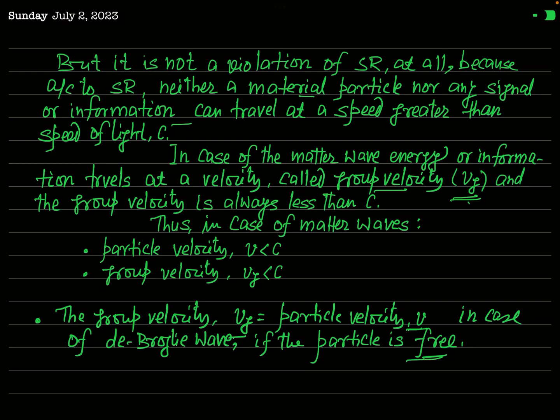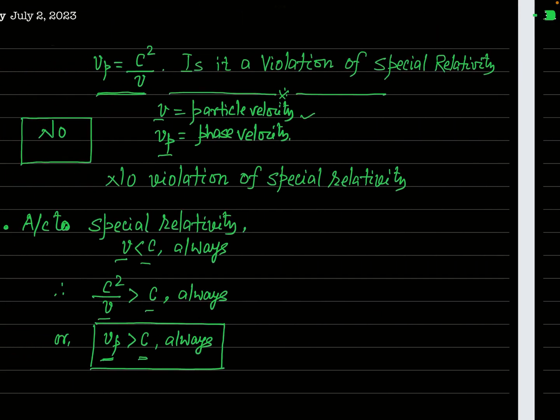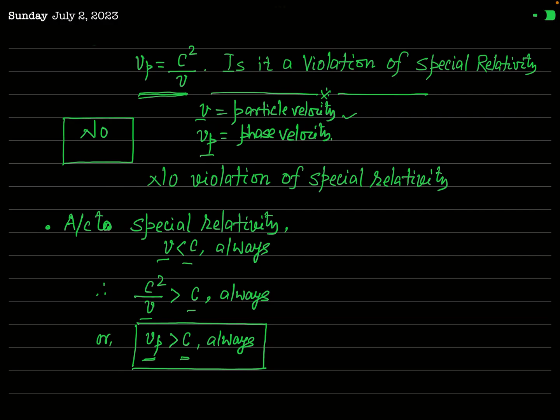According to special relativity, particle velocity is always less than c. So in the case of matter waves, v is always less than c, and group velocity is always less than c too. The information is carried by this group velocity, which is always less than c — and this vg may equal v, the particle velocity. Finally, we conclude that in the case of matter waves, the information or signal is carried at a speed called group velocity, which is always less than c, so there is no violation of special relativity according to the formula vp = c²/v.